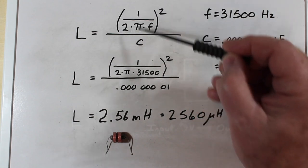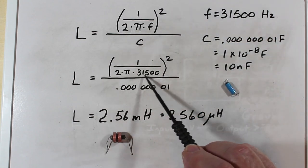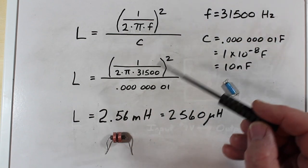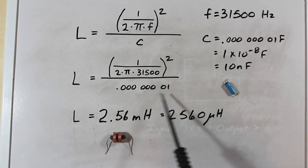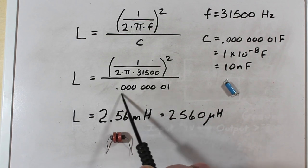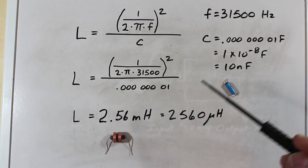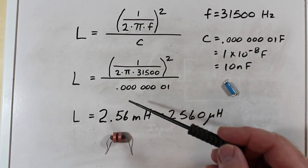So we have all the things that we need to fill this out. So we put our 31,500 here. And we put our capacitor size down here in farads, which is this number here. Now I've just written this out, you can use exponents if you want to. But if this is a number the way you want to do it, that's just fine too. It all works in the long run.